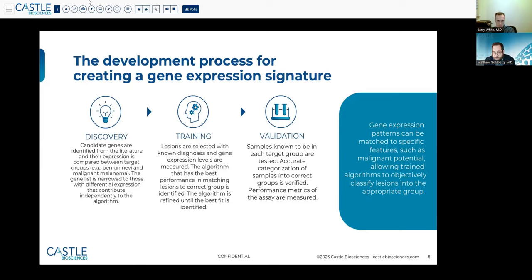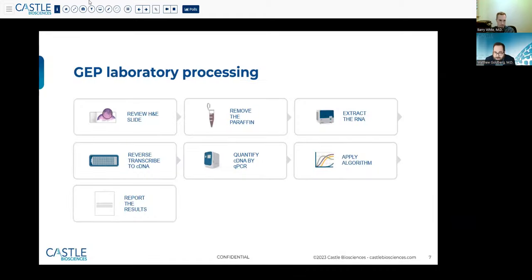That algorithm that is then locked is tested in validation cohorts, looking to see if the performance or statistical accuracy is maintained in independent cohorts of patients. The laboratory process: when a case is submitted for testing, a signed test requisition form is submitted by the ordering clinician to the Castle Biosciences Laboratory.